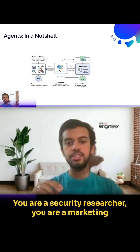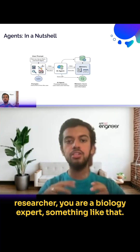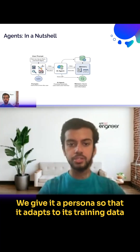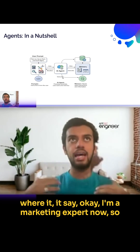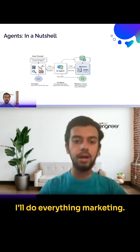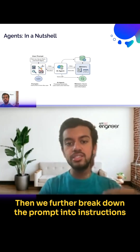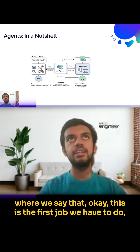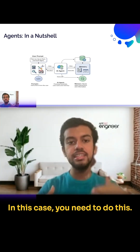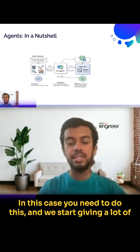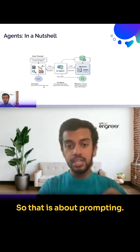First, we give it a name — 'You are a security researcher,' 'You are a marketing researcher,' 'You are a biology expert.' We give it a persona so that it adapts its training data, saying 'I am a marketing expert now, so I'll do everything marketing.' Then we further break down the prompt into instructions: this is the first job, then we address edge cases with examples and so on. That's about prompting.